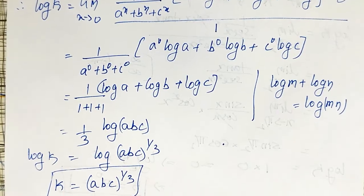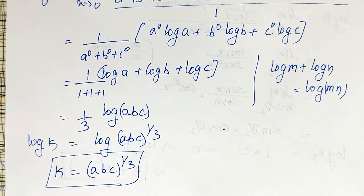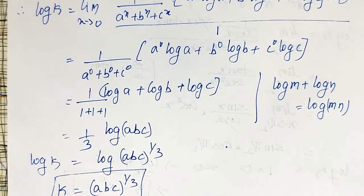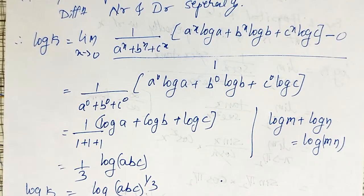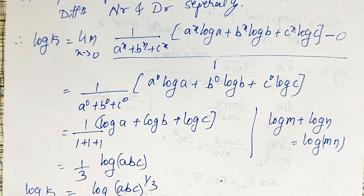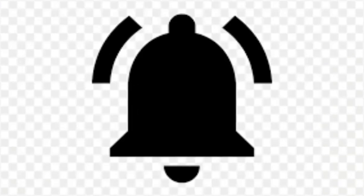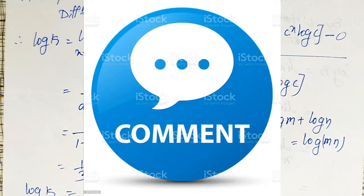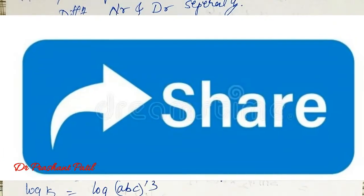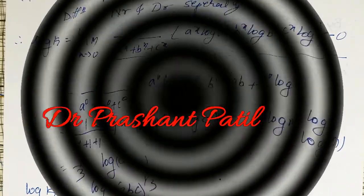Like this, some more examples on indeterminate forms such as 1^∞, 0^∞, and ∞^∞ I am going to solve in my next videos. If you haven't yet subscribed to my channel, please subscribe and don't forget to hit the bell icon so that you get notifications. Like, comment, and share this video. Thank you, friends.